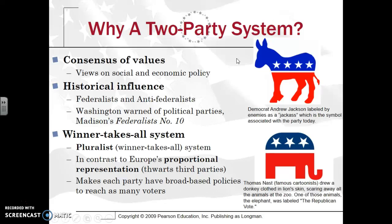So why a two-party system? There is a history of a two-party system in the United States, starting with the Federalists and the Democratic Republicans. You also have your Federalists and Anti-Federalists, which would emerge into those two parties. Even though Washington warns of political parties and the destruction he foresees them creating, you see that in Madison's Federalist Papers Number 10 he is warning against factions but saying that they're inevitable, that in some ways they are helpful and they are checking one another.